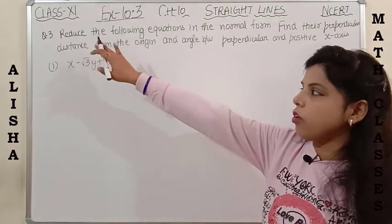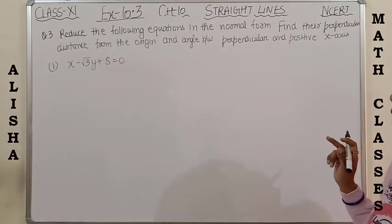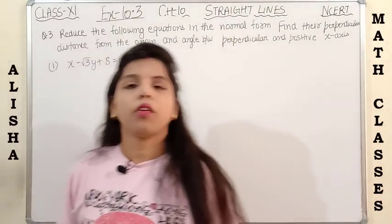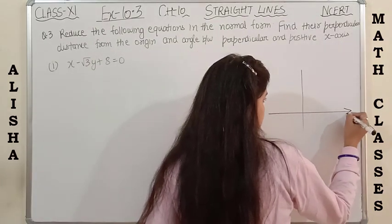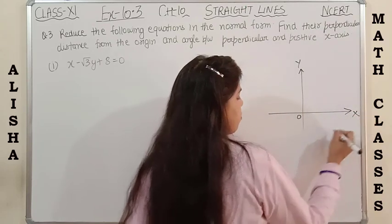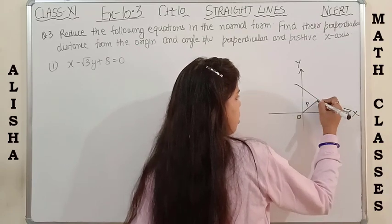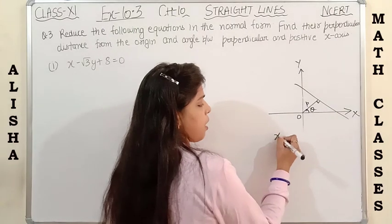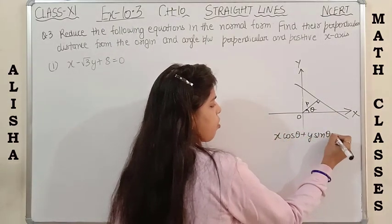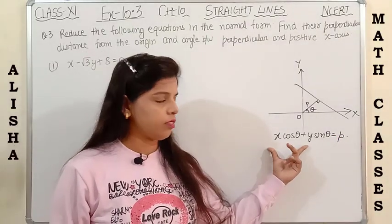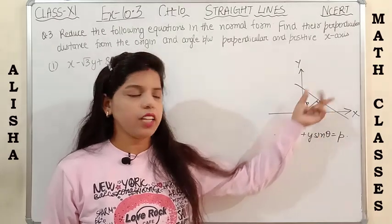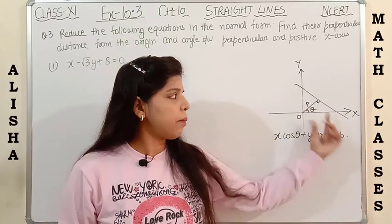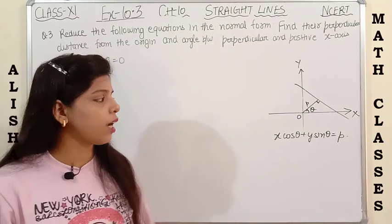Question 3: reduce the following equations into normal form, find their perpendicular distance from the origin, and the angle between the perpendicular and the positive x-axis. The normal form of a line is x·cosθ + y·sinθ = p, where p is the perpendicular distance from the origin and θ is the angle the perpendicular makes with the positive x-axis.